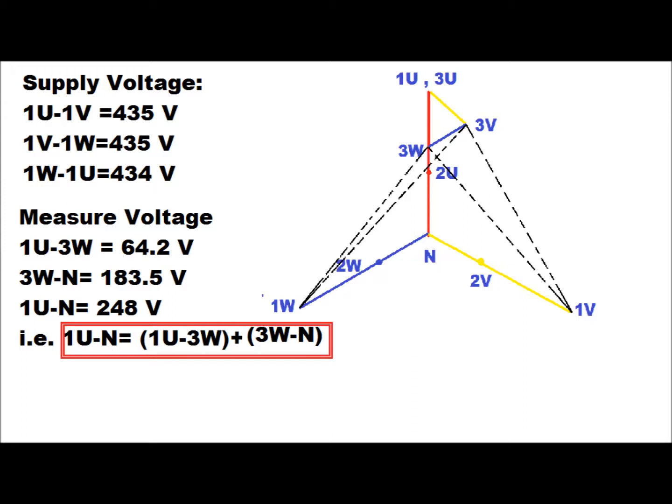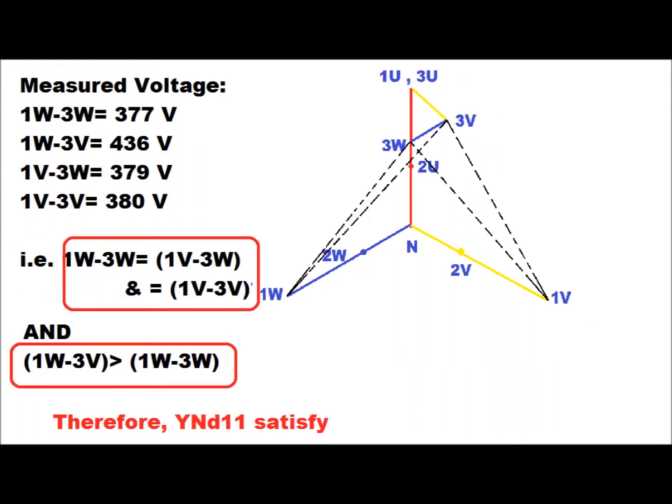We measure the voltage between 1U and 3W, which comes to 464.2 V; between 3W and N, which comes to 183.5 V; and between 1U and N, which comes to 248 V. The measured voltage between 1U and N — that is between red phase and neutral of primary winding — is equal to 1U-to-3W plus 3W-to-N.